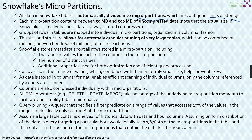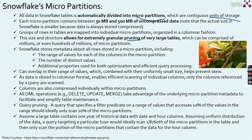Groups of rows in the table are mapped into individual micro partitions organized in columnar fashion. This size and structure allows for extremely granular pruning of very large tables. Pruning — similar to the gardening concept of cutting unnecessary parts of a plant — in Snowflake's case means eliminating unnecessary partitions not required for query processing. Snowflake stores metadata about all rows in each micro partition, including the range of values for each column, the number of distinct values, and additional properties used for optimization and efficient query processing.